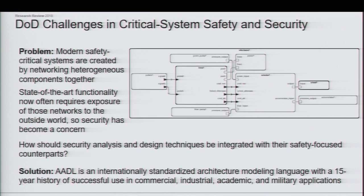Modern systems have to have those networks exposed to the real world, primarily for increased functionality. The amount of compute you can fit on something that has to fly is much smaller than what you can put on the ground, so if you can make your airplane communicate with the ground, you can leverage those computational resources. But of course, this also exposes new security risks, and so these safety critical systems are now also security critical.